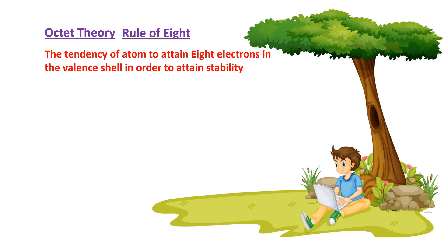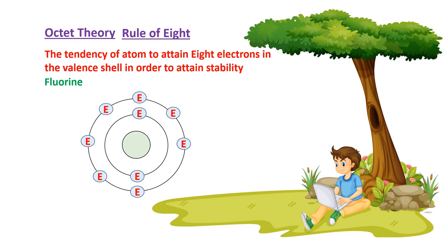For example, let's look at fluorine. Fluorine has an atomic number of 9. This means fluorine has 9 electrons. The electron configuration is: 2 electrons in the first shell and 7 electrons in the second shell. The outermost shell of fluorine has only 7 electrons, so the shell is incomplete and fluorine is unstable.